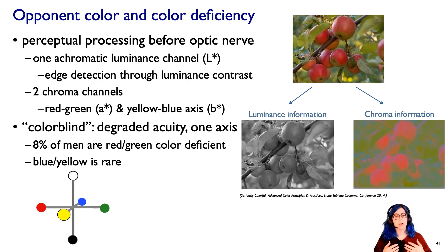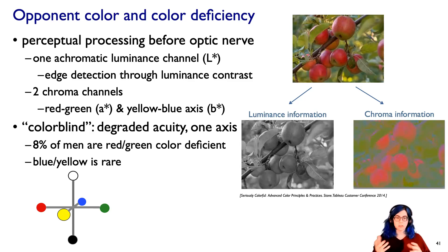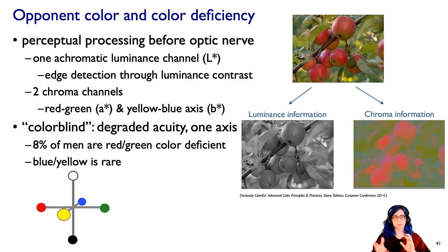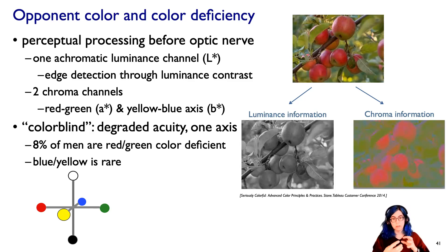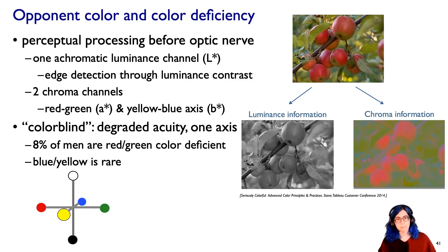In particular, 8% of men are color deficient along that red-green axis, and there are actually two flavors — one more about the red and one more about the green. It is possible, but much more rare, to have color deficiencies along the blue-yellow axis, and that deficiency is not sex-linked.